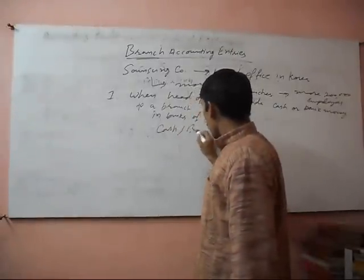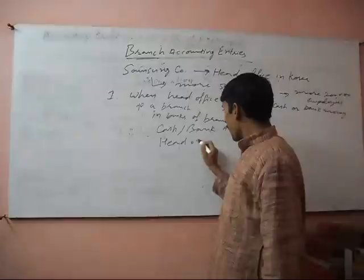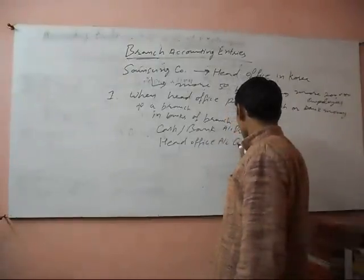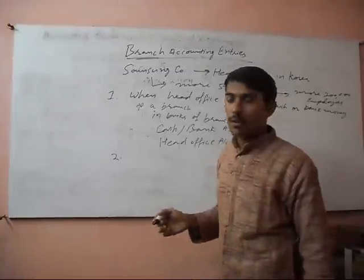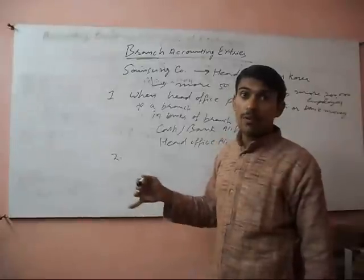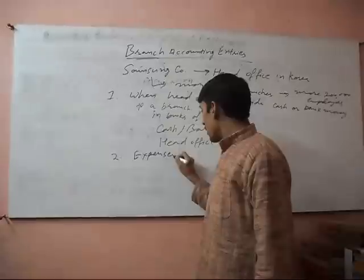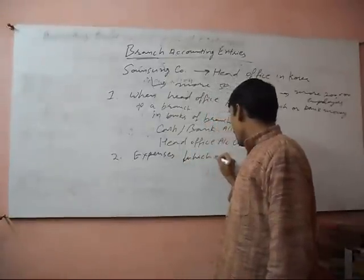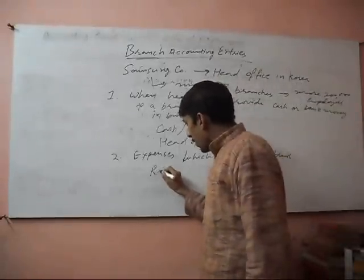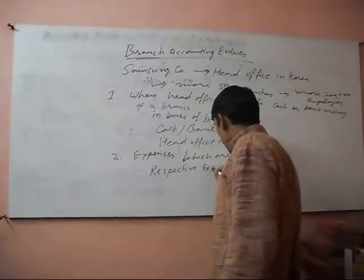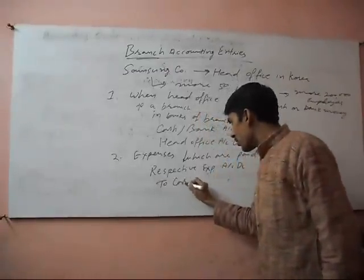Cash or Bank Account debit, and the credit will be Head Office Account, because we receive the money from our head office. Then in the branch, we will pass the entry of expenses if paid by the branch: Respective Expenses Account debit, to Cash or Bank Account.